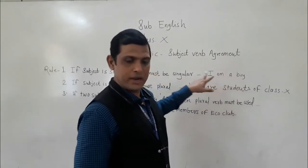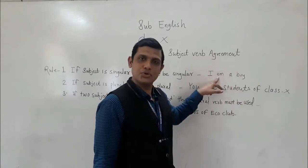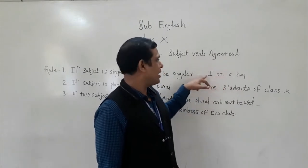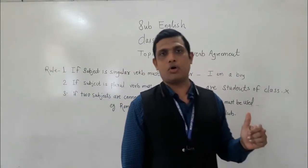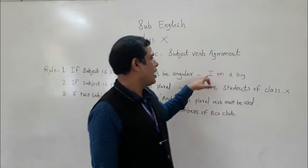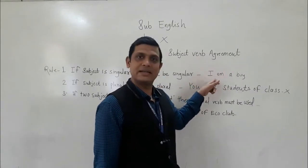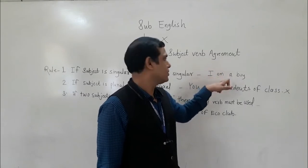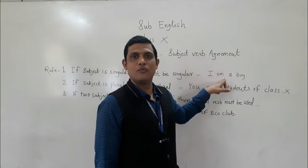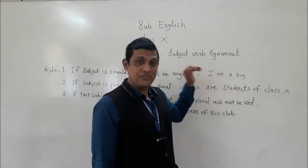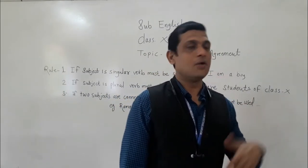For example, 'I am a boy.' Here, 'I' means singular subject, so 'am' is also a singular verb. 'I am a boy' is a meaningful sentence. 'I' is the subject, 'am' is the verb. So in this sentence, 'I' agrees with 'am' — subject is singular, verb is also singular. If that agreement is there, then only we can say it is a meaningful or correct sentence.